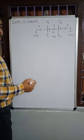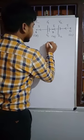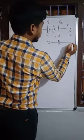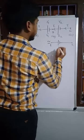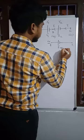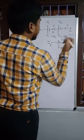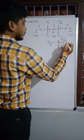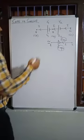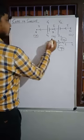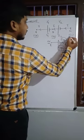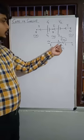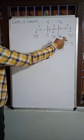Now if we draw the equivalent circuit for these two cells, it will be like this. We will have one single cell joined across points A and C, whose EMF will be E equivalent and internal resistance will be R equivalent. So here we have to find out what is the equivalent EMF and what is the equivalent resistance. The same current I will be flowing. Also, VA is the potential of point A, VB is the potential of point B, and VC is the potential of point C.